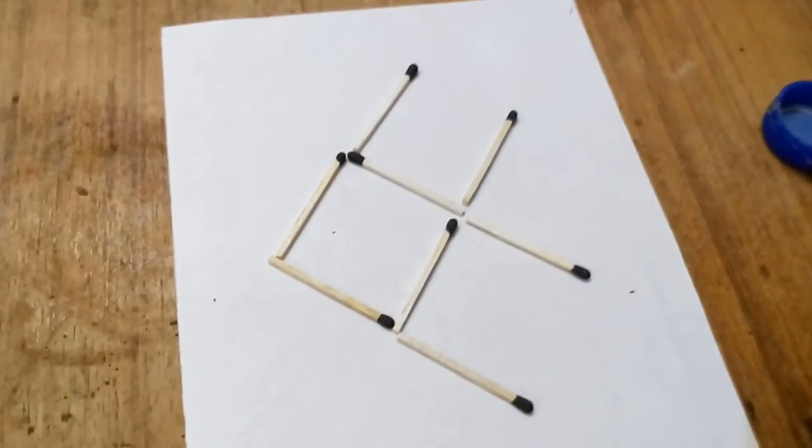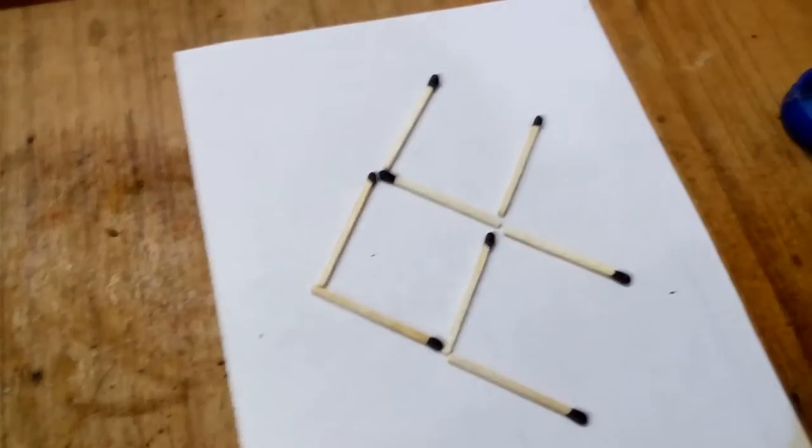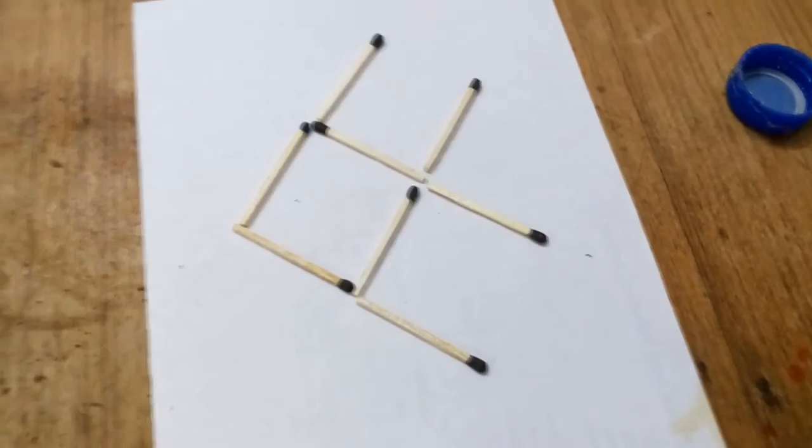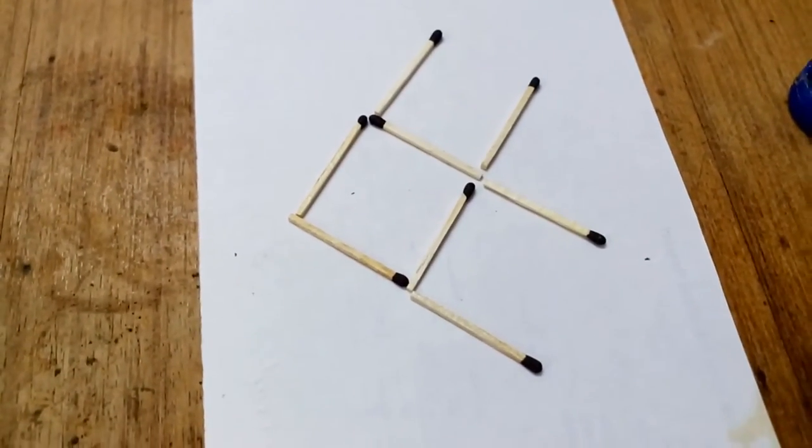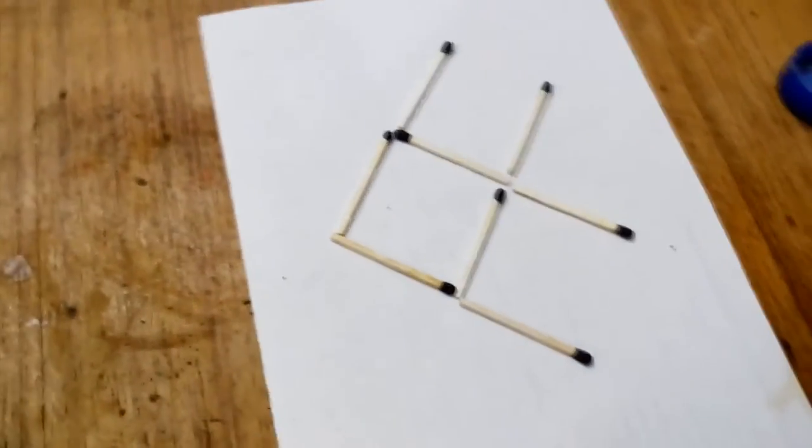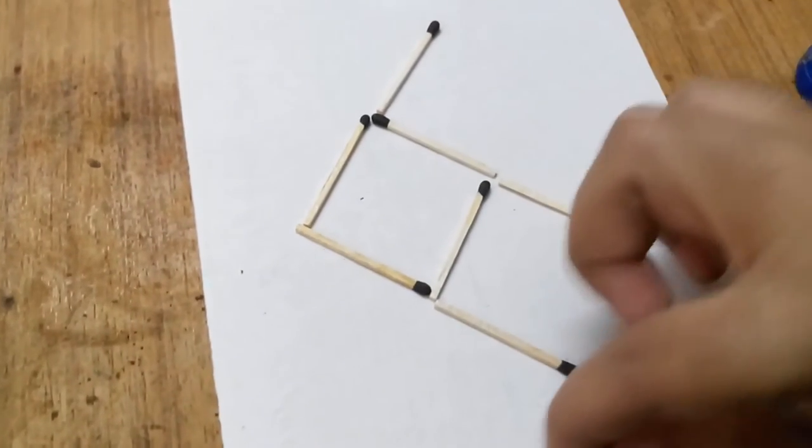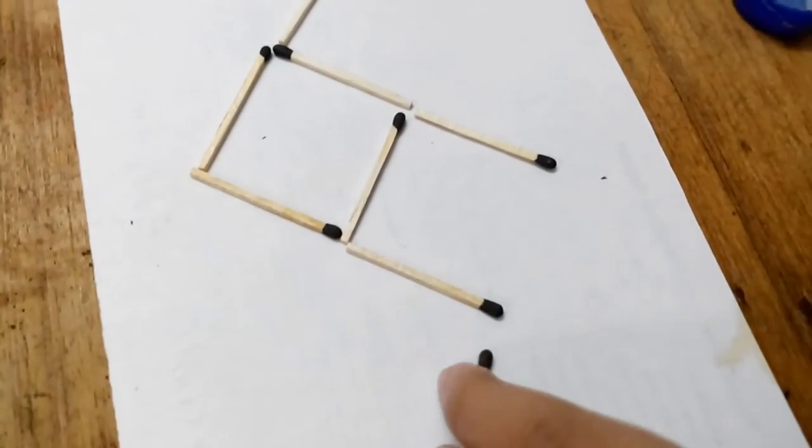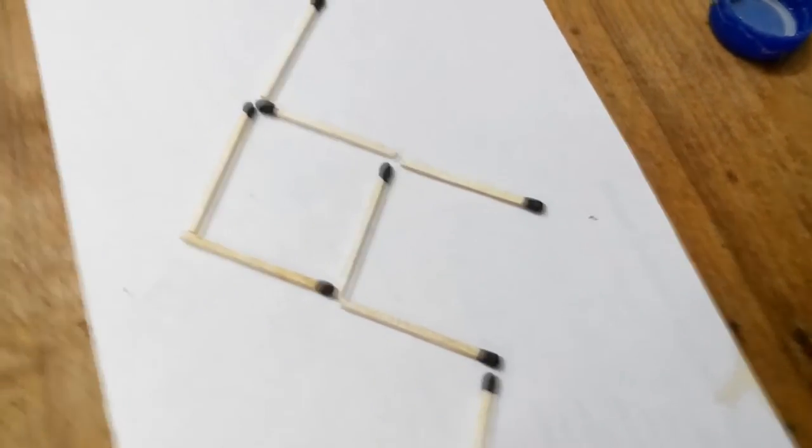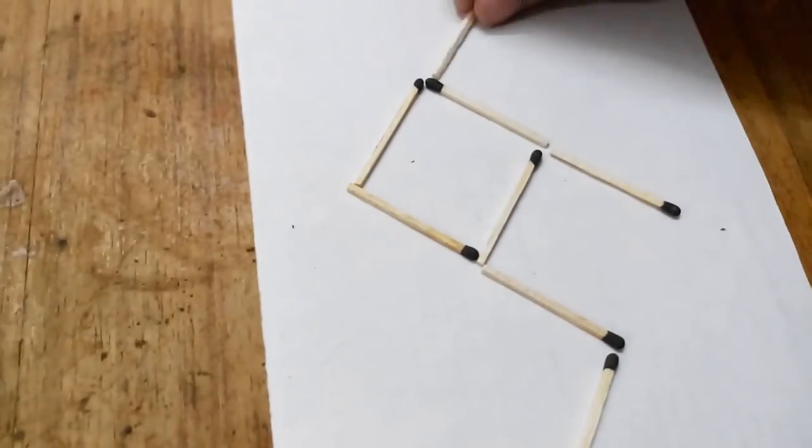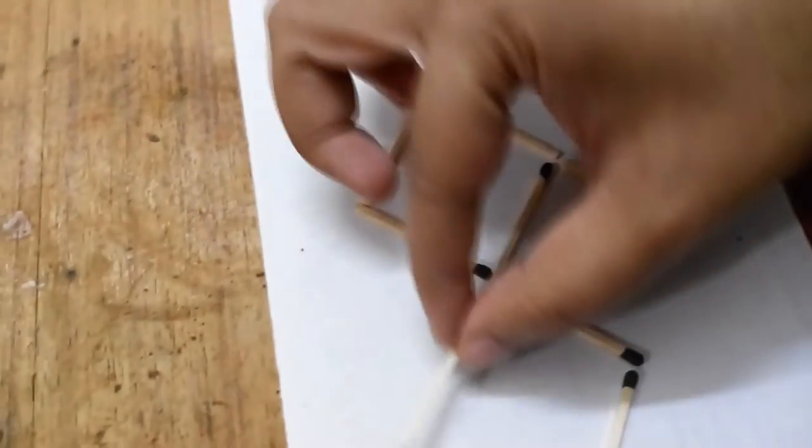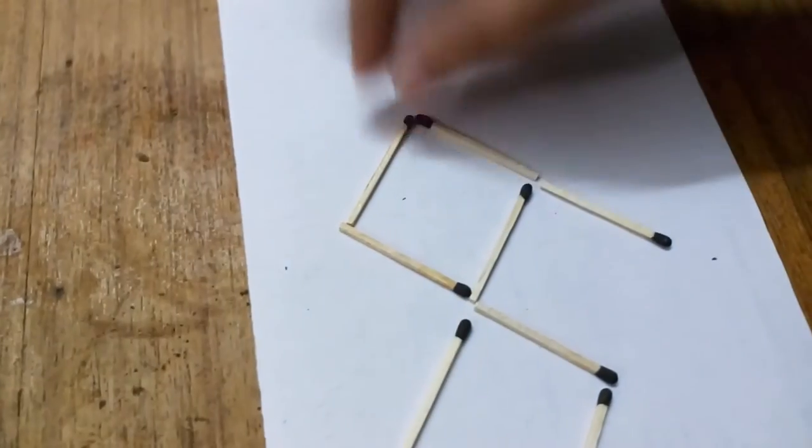They only have to move three matches. They can move three matches, and what are they going to do? They're going to scratch their heads like they did before. What you have to do is move this one match over here, second match over here, and third match here.